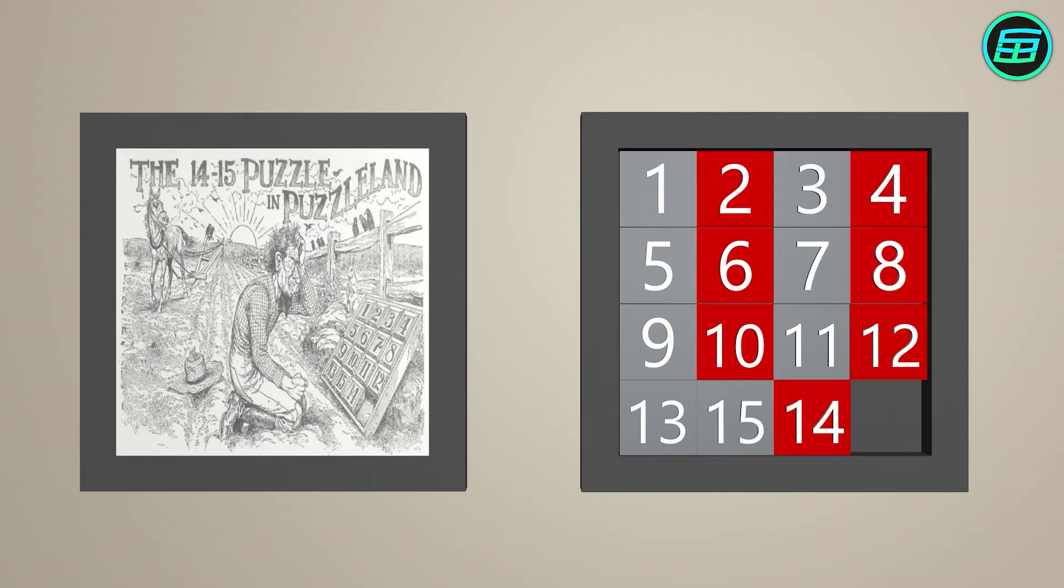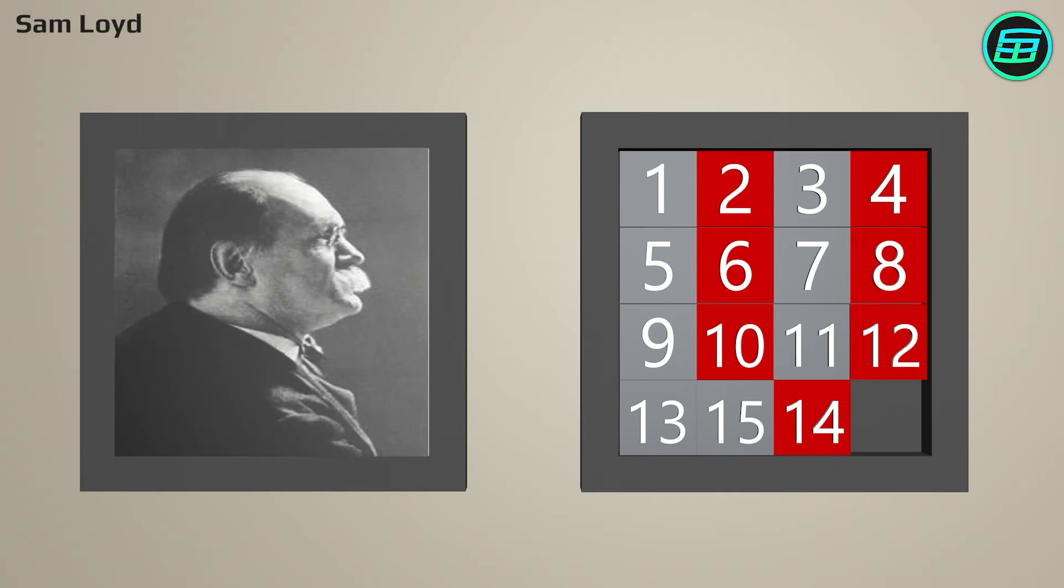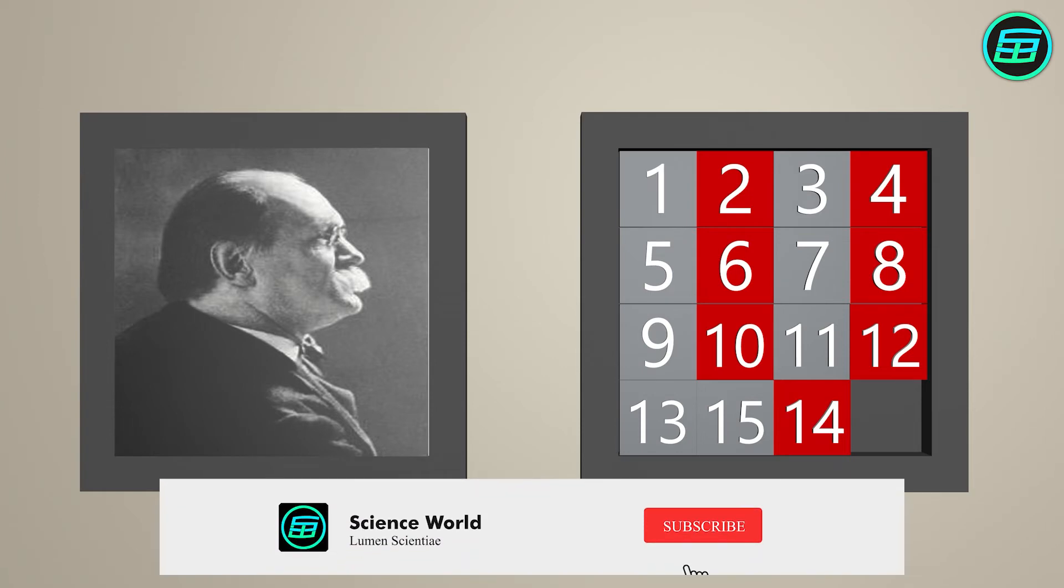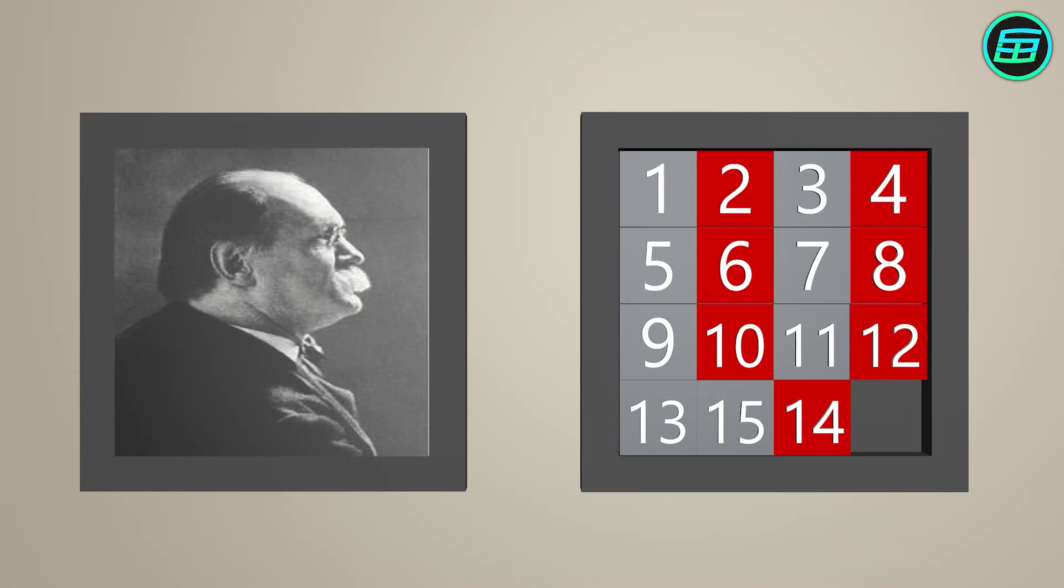According to regulations, Lloyd had to submit a working model so that a prototype batch could be manufactured from it. Having shown the game to a patent official, he was asked if it were solvable. 'No,' he replied, 'it's mathematically impossible.' Upon which the official reasoned there could be no working model and therefore no patent.